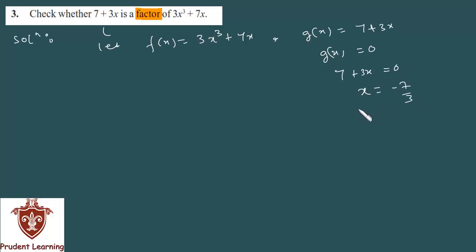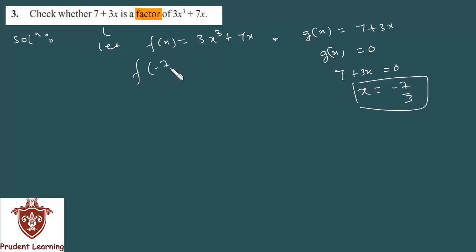x की value आएगी minus 7 by 3 — 7 RHS पर जाके minus 7 बनने वाला है और 3 को denominator में ले जाएंगे। तो x की जो value आई, इसका zero आया, वो आपको f(x) में put करना है। मतलब f of minus 7 by 3 निकालेंगे। जब आप इसको solve करेंगे, अगर यह 0 आ जाता है तो 7 plus 3x is a factor of 3x cube plus 7x, लेकिन अगर 0 नहीं आता तो 7 plus 3x is not a factor।